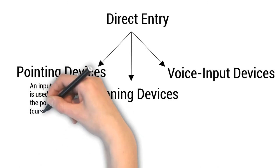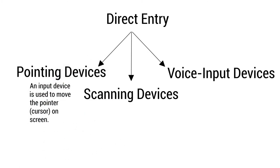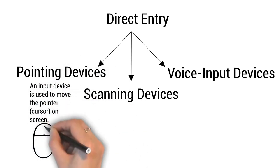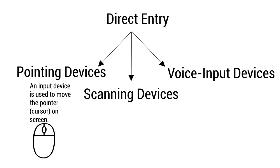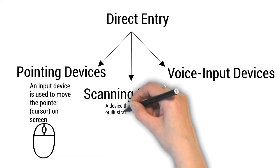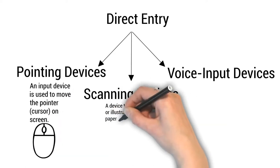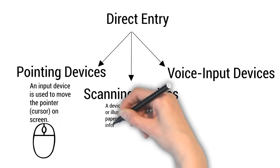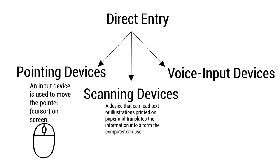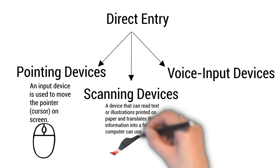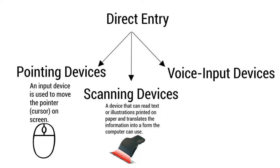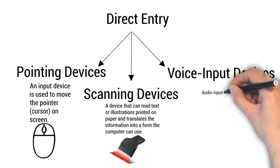A pointing device is used to move the pointer or cursor on screen. A scanning device can read text or illustrations printed on paper and translates the information into a form the computer can use.